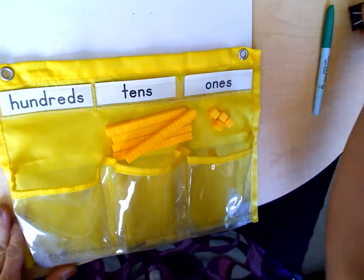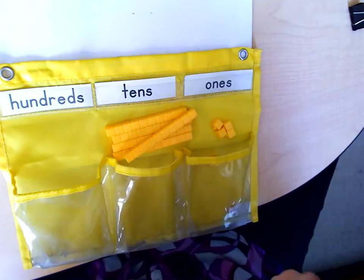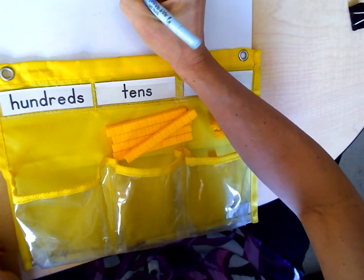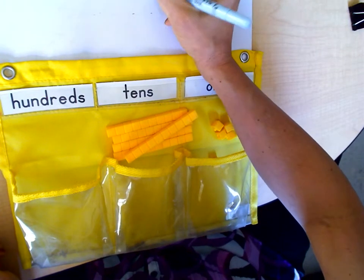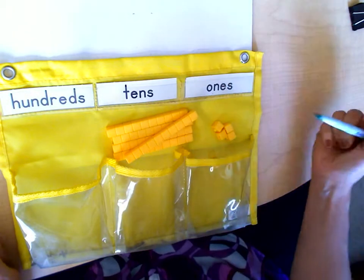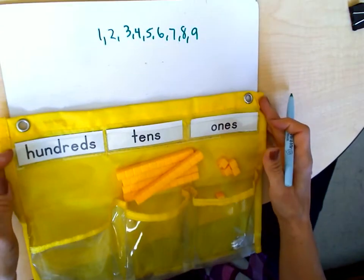So let's talk a little bit about the ones place value. When I write a number, I go one, two, three, four, five, six, seven, eight, nine. Those are all in the ones place.